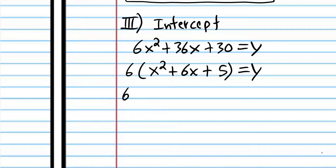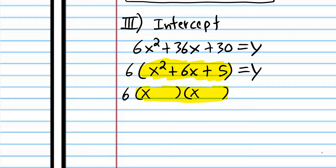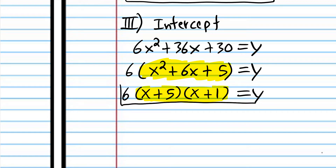Then I'm going to factor the inner terms. That trinomial is becoming a product of binomials. What two numbers multiply to 5 and add up to 6? It's 5 and 1: 5 times 1 is 5, and 5 plus 1 is 6. And that is intercept form.